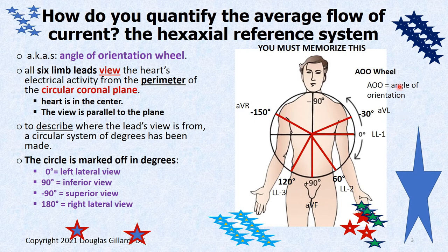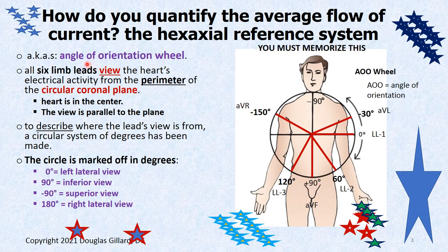This is the AOO wheel — the angle of orientation wheel. This is how we quantify the average flow of current through the heart, which is important because it tells us about different pathologies. Some call it the hexaxial reference system; I call it the angle of orientation wheel, the AOO wheel. It's mainly designed for the limb leads.